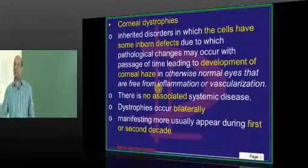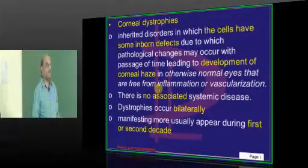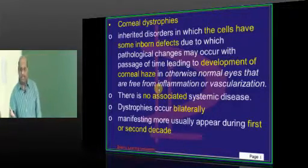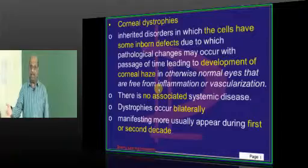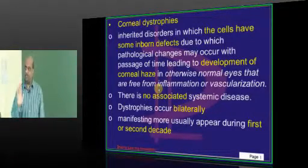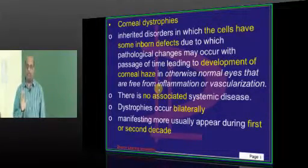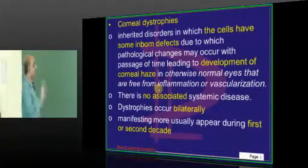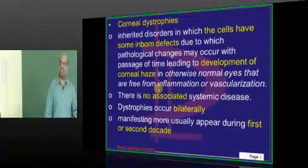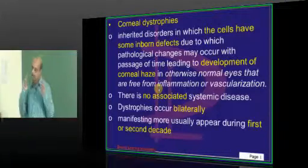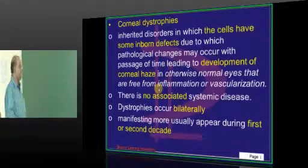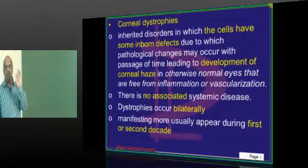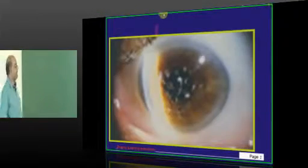There is no associated systemic disease. Unlike conditions like Marfan's syndrome or Alport syndrome, there is no need to read about those in the corneal dystrophy topic. No association with systemic disease. Both eyes are affected bilaterally. The first to second decade is the common age group where corneal dystrophies typically present.